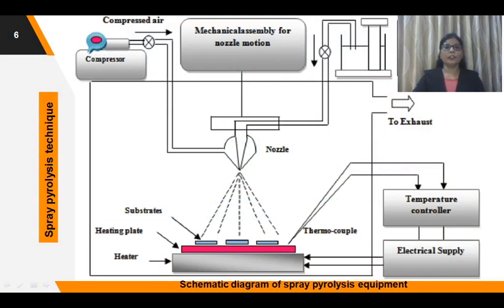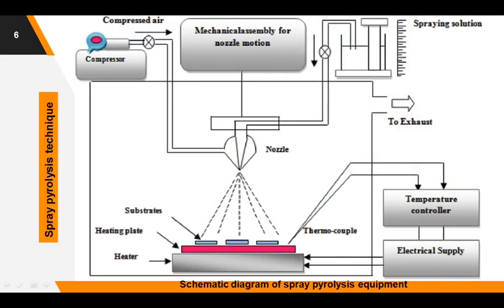The spray pyrolysis equipment consists of different parts: a spray nozzle, rotor for the spray nozzle with speed controller, liquid level monitor, hot plate with temperature controlling arrangement, gas regulator, airtight metallic chamber, and substrate. The spray nozzle is made of glass and consists of an inner solution tube surrounded by a gas tube through which carrier gas flows. With the application of pressure to the carrier gas, a vacuum is created at the tip of the nozzle and the solution is automatically sucked in and spraying starts.